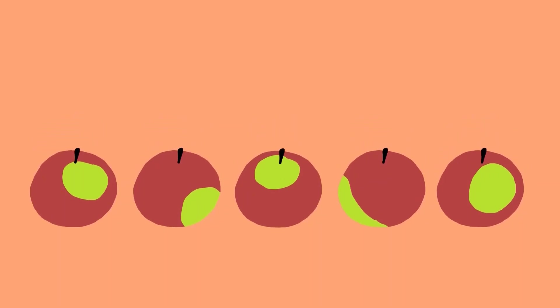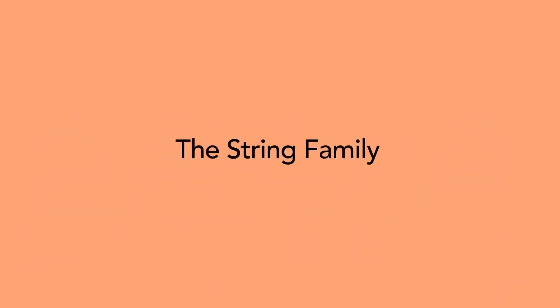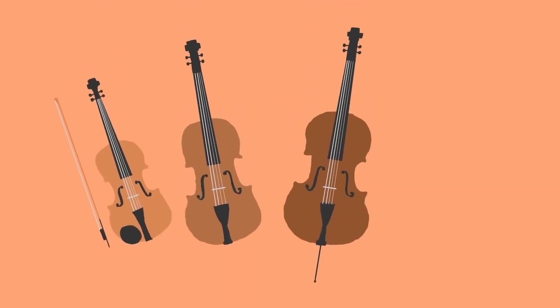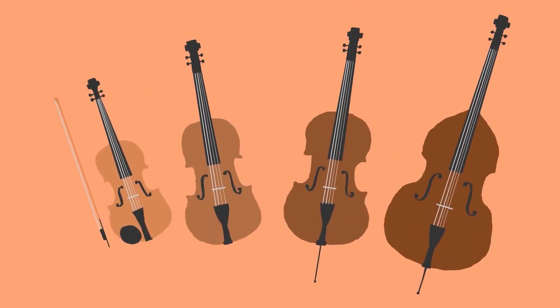Same thing goes for sound sources. One category of timbre we use quite often is strings. Inside of the string family, we have violins, violas, cellos, and double basses. They have similar timbres and tones in some ways, but each one is distinct.